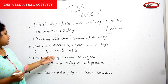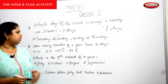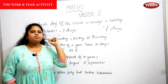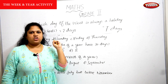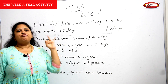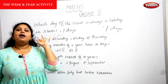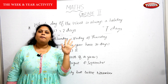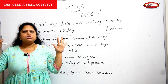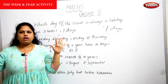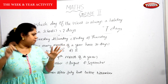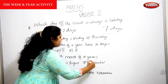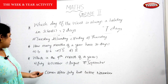Which is the 9th month of the year? Count: January, February, March, April, May, June, July, August, September. September is the 9th month of the year.